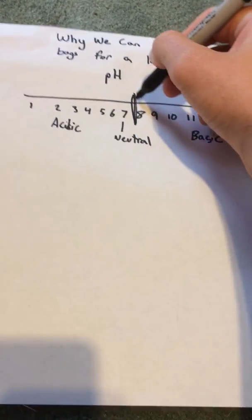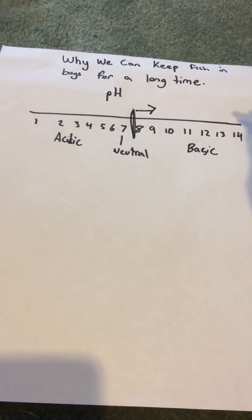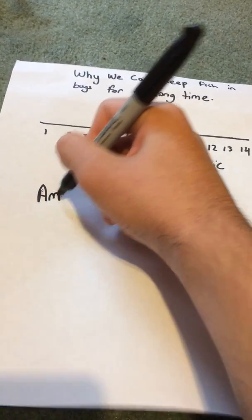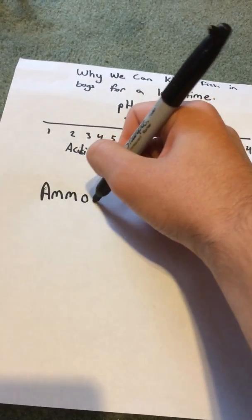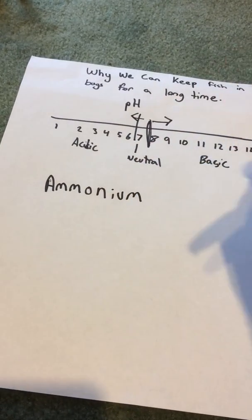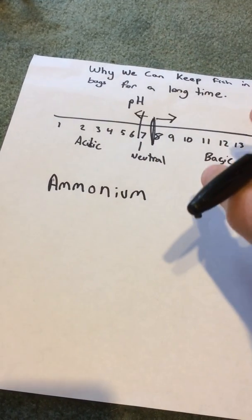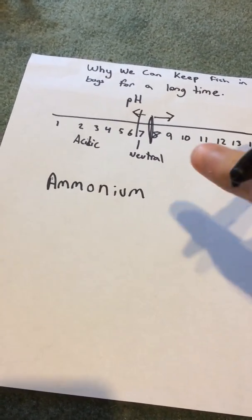But when it's in this direction past the seven, it becomes ammonium. I'll write it out for you guys so you can see. Now ammonium is completely harmless to fish.